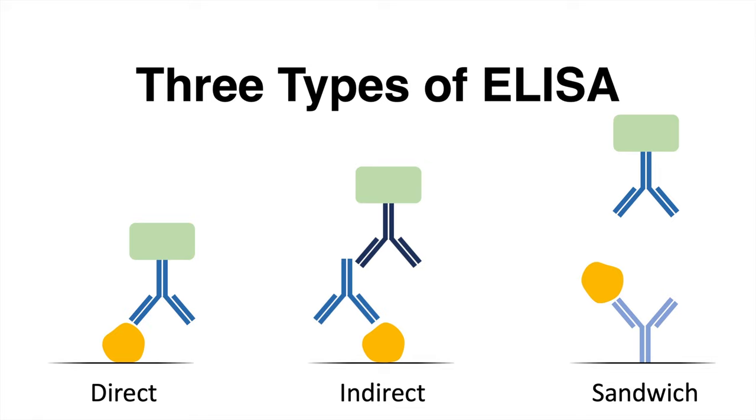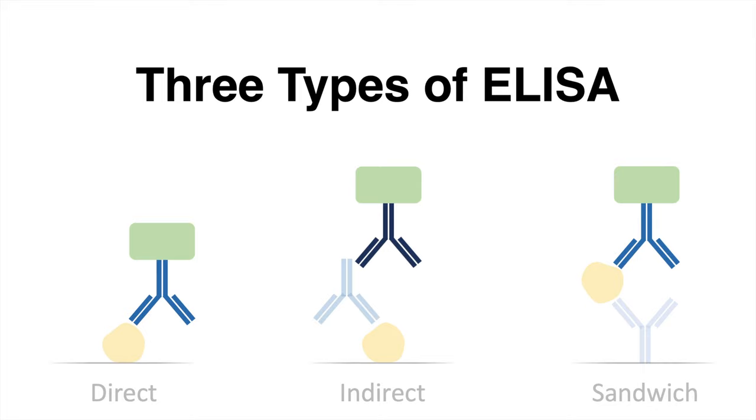But all three ELISAs have one thing in common. The last antibody binding is always conjugated to the enzyme which confirms binding.